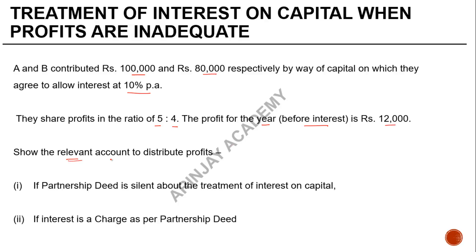The profit for the year before interest is ₹12,000. Show the relevant account to distribute profits if the partnership deed is silent about the treatment of interest on capital, or if the interest is a charge as per the partnership deed. Let's work out some numbers: the interest for A will be 10% of ₹1 lakh, which is ₹10,000.